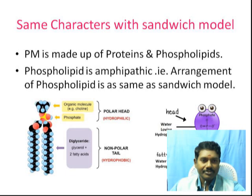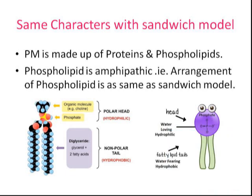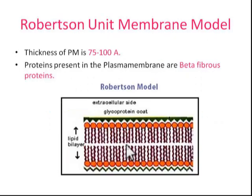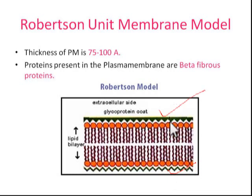Plasma Membrane is made up of proteins and phospholipids — that is the Sandwich Model. Robertson also agrees with this statement: Plasma Membrane is made up of proteins as well as phospholipids. In the top layer and bottom layer there is a protein, and in between the two layers you can see the phospholipids.